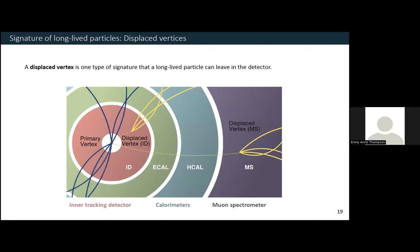What does a long-lived particle look like in the ATLAS detector? I want to focus on one signature called a displaced vertex. This occurs when a long-lived particle is produced and then travels a certain distance before decaying into multiple charged particles. We can then track these charged particles and find that they meet at a common point which is displaced from the primary interaction point. This is the signature I chose to focus on during my PhD, and we can search for displaced vertices at really any point in our detector — I decided to focus on the innermost detector.